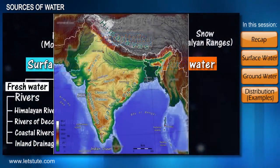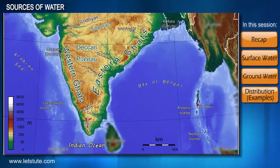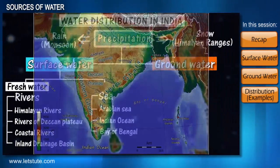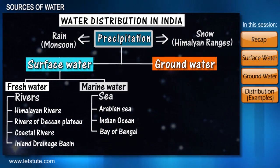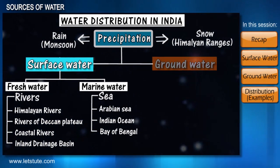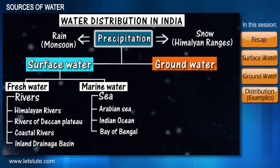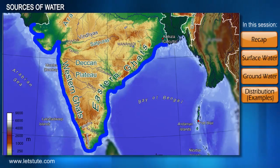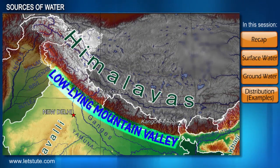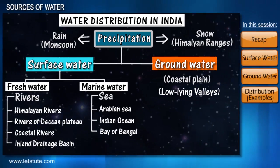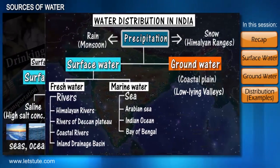India also forms a peninsula to its south, surrounded on three sides by seas, which contributes to the marine water sources of the country. Talking about groundwater sources, India does not have large continuous aquifers, but the coastal plains and the low-lying areas of mountain valleys are rich sources of groundwater.